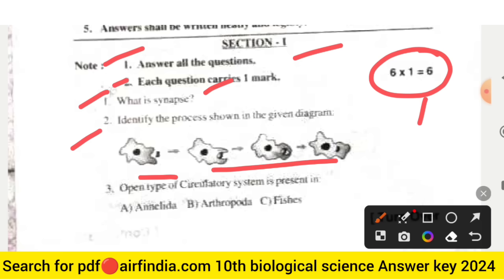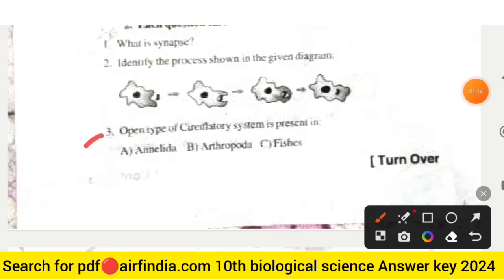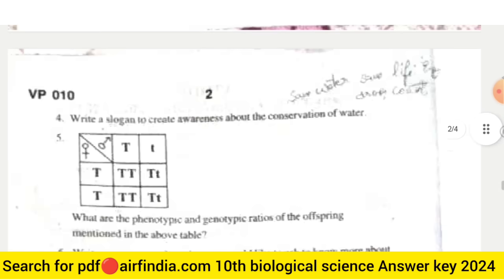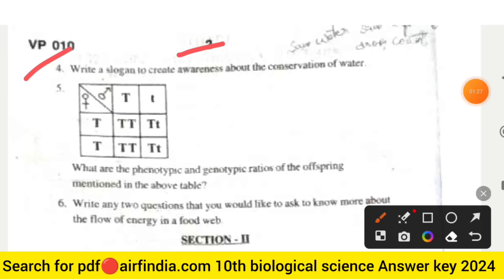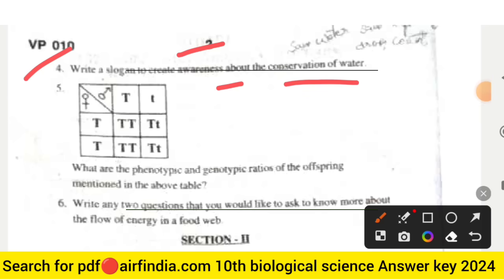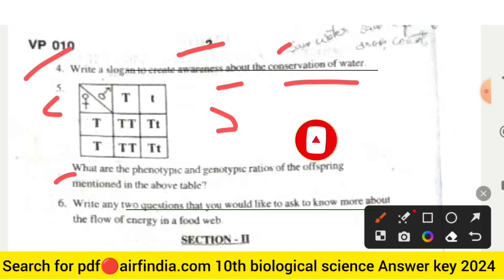There are some pictures given in question number two. The third question is: open type of circulatory system is present in Annelida, Arthropoda, and fishes — which is the true answer? The fourth question on the second page is: write a slogan to create awareness about the conservation of water.